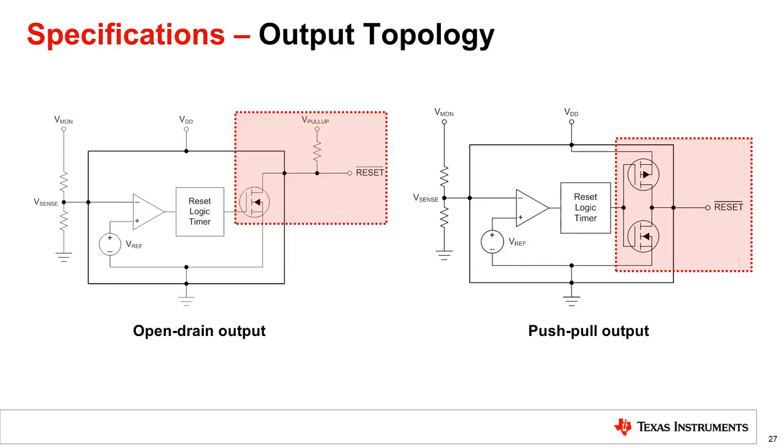Voltage Supervisors come in two different types of output topologies: open drain and push-pull. Open drain supervisors contain one internal N MOSFET and requires an external pull-up resistor to create a logic signal output. Push-pull supervisors utilize a pair of complementary MOSFETs internally, one P MOSFET and one N MOSFET. There are pros and cons to each of the output topologies mentioned, and depending on your system requirements, one topology may be more suitable than the other.